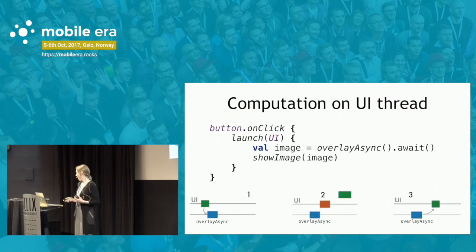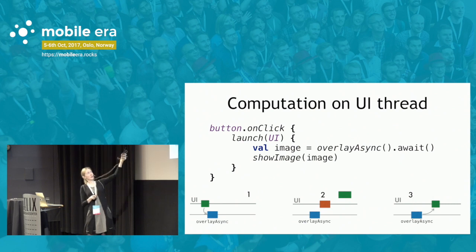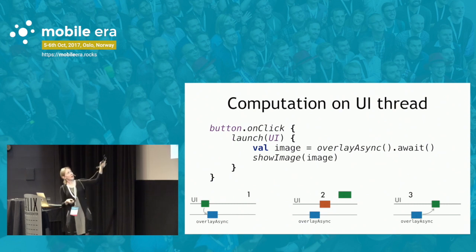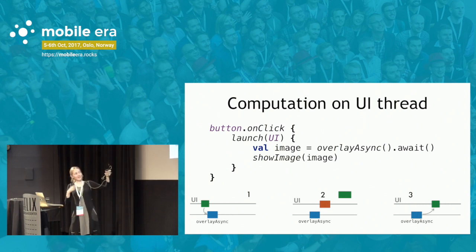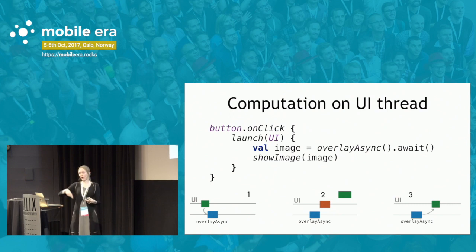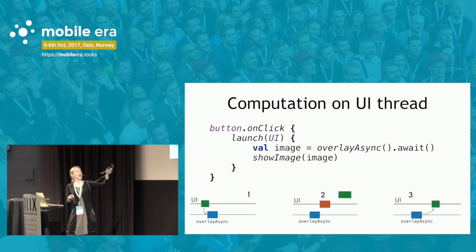There's another example showing a combination started on the UI thread. We use launch, which does a similar thing to async — it starts a coroutine, here on the UI thread. Inside this coroutine, we start a new coroutine saying 'overlay image' — just loading two images and awaiting them. While we do this, our green main coroutine is suspended. The UI thread may be busy doing something else, and then we return to the main thread and continue.